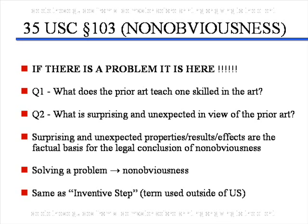The third requirement of the most important three is Section 103, dealing with obviousness. Usually, if there's a problem in obtaining a U.S. patent, it is here. The first question is: what does the prior art teach one skilled in the art about your invention? And second, what is surprising and unexpected about your invention in view of the prior art? It is the surprising and unexpected properties or results of your invention that gives the factual basis for the legal conclusion of non-obviousness. In cases where your invention solves a problem that other things cannot take care of, that usually will satisfy the obviousness requirement and get your patent.